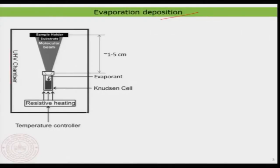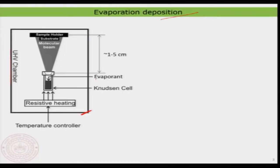You need an ultra-high vacuum or high vacuum chamber — that is the most important requirement. This black box represents the UHV or high vacuum chamber. The material you want to evaporate, the evaporant, needs to be kept inside a cell generally known as a Knudsen cell, named after the scientist Knudsen. You put the material of interest inside the Knudsen cell. Knudsen cells are generally made of high-melting metals such as molybdenum or tungsten, or silicon.